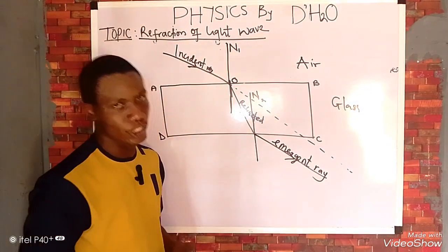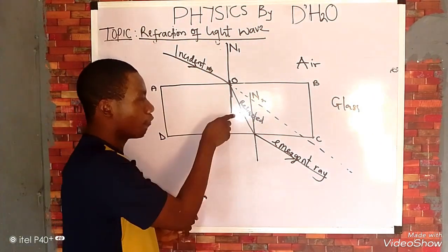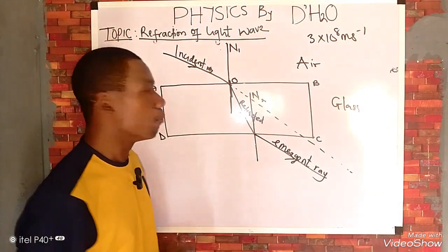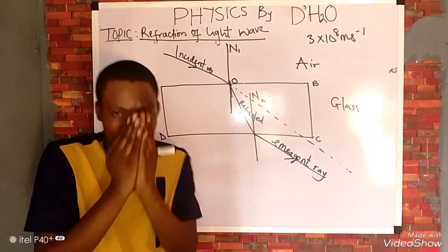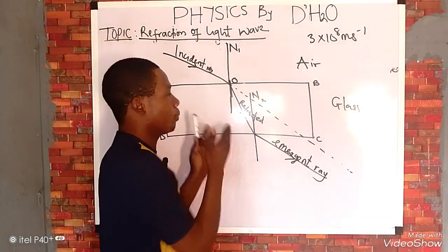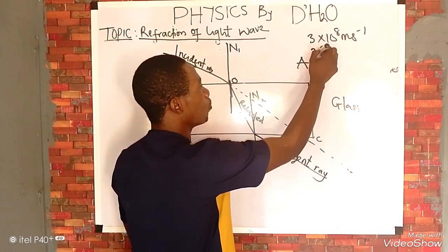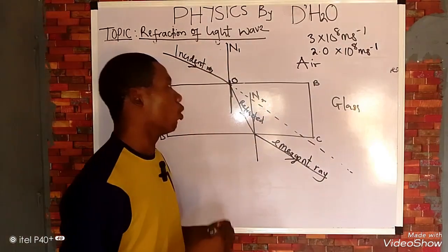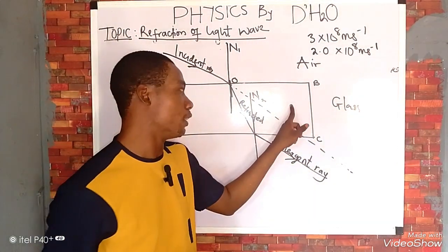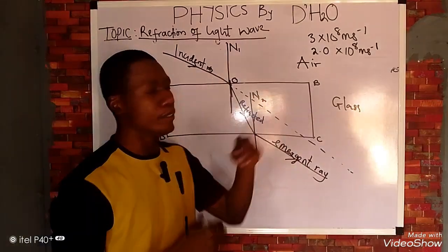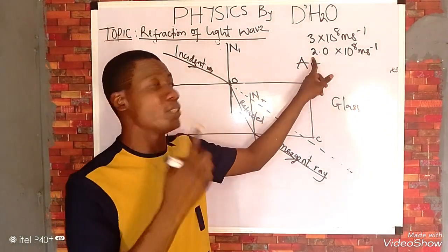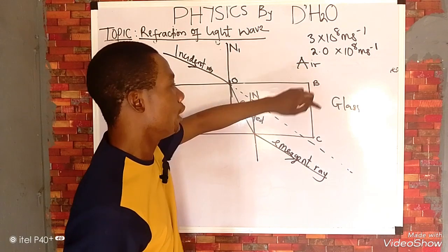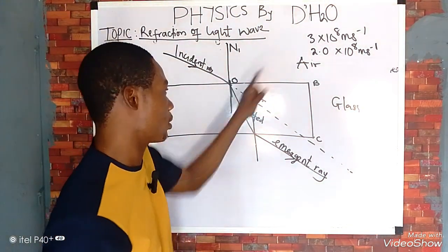What is happening here is that the speed and wavelength are changing. The speed of light in air is 3 × 10⁸ m/s, but when light enters glass, the speed reduces to approximately 2.0 × 10⁸ m/s. This value may vary depending on the refractive index of the glass, but for most glasses where the refractive index is around 1.5, the speed is approximately 2.0 × 10⁸ m/s.